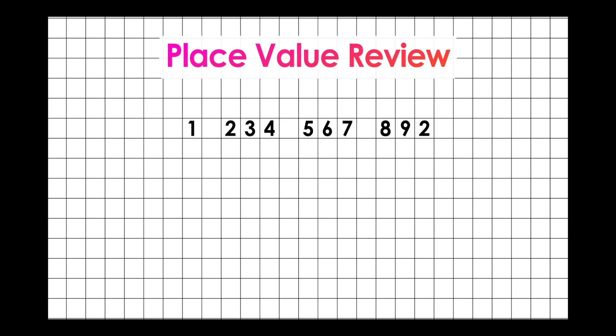Our large number is 1,234,567,892. Remember, when we identify each digit's place value in a whole number, we start with the rightmost digit and work our way left.